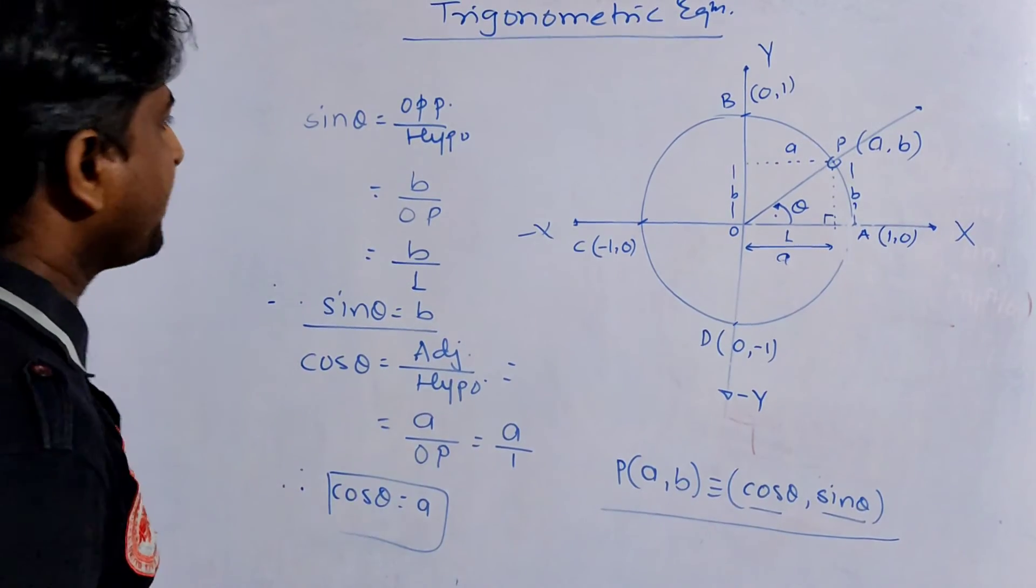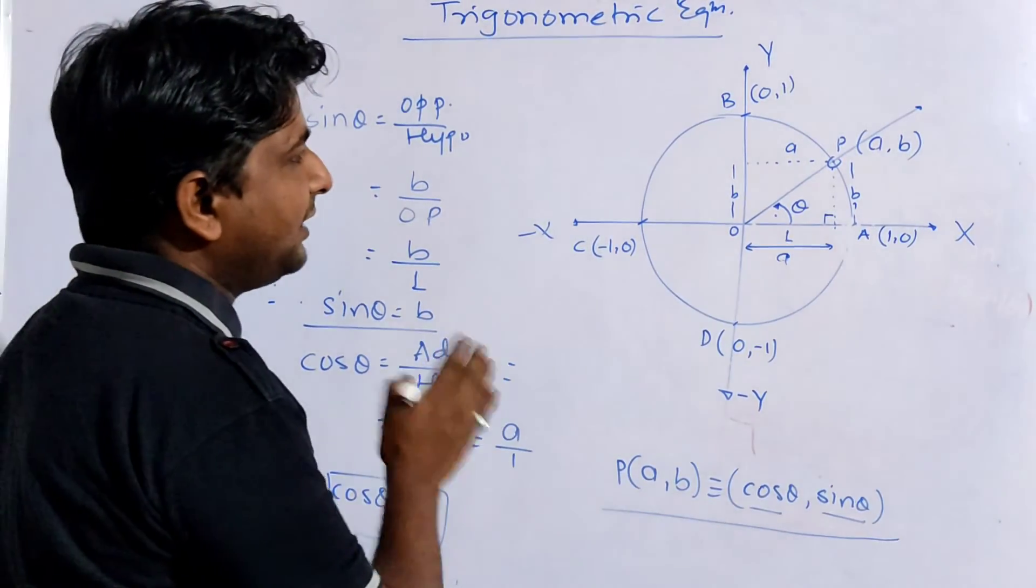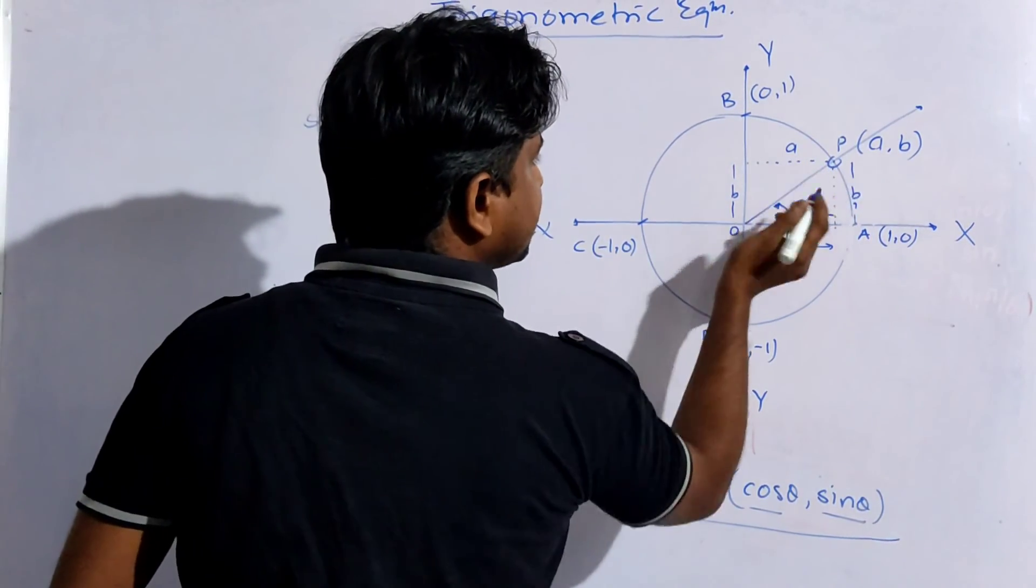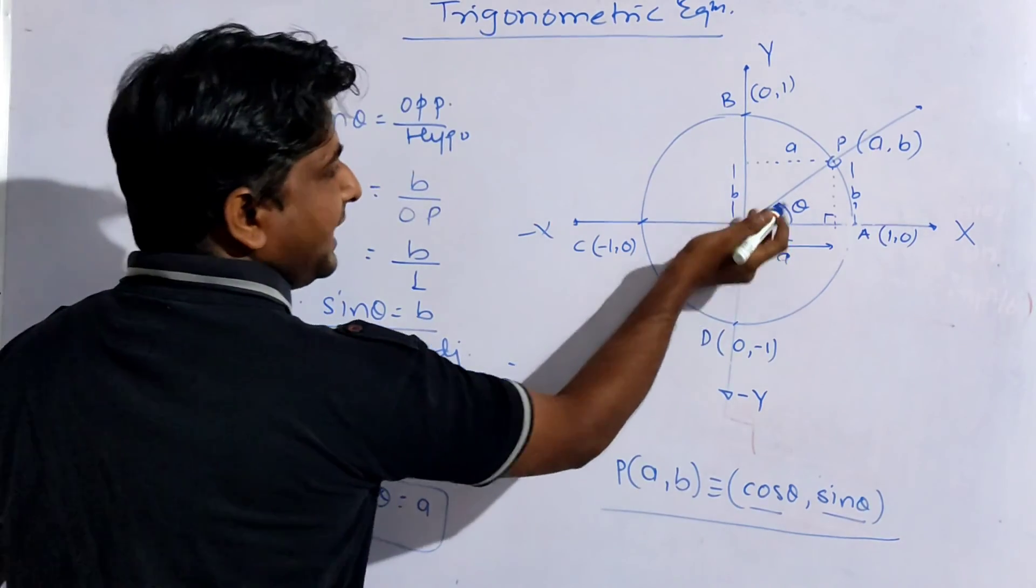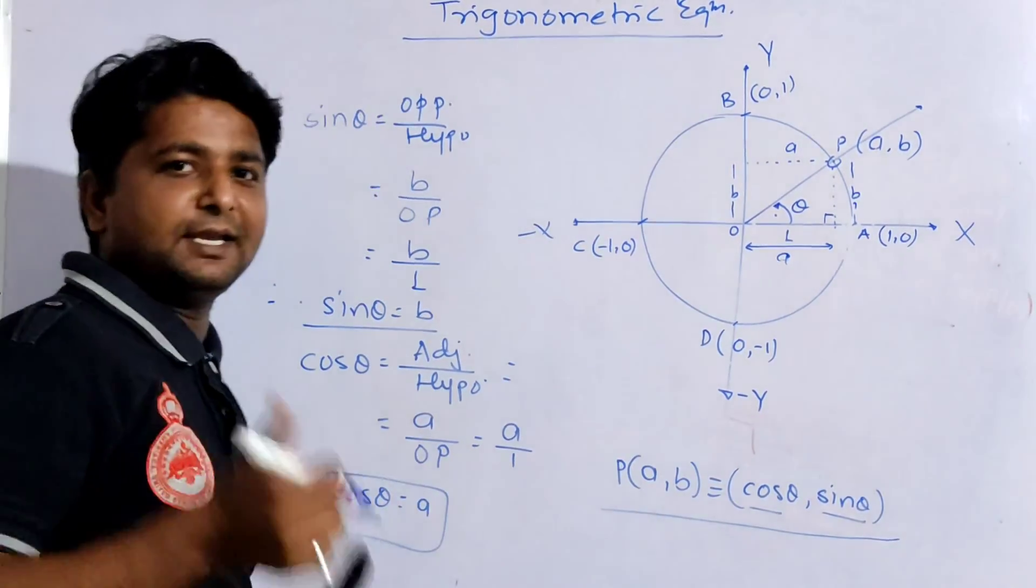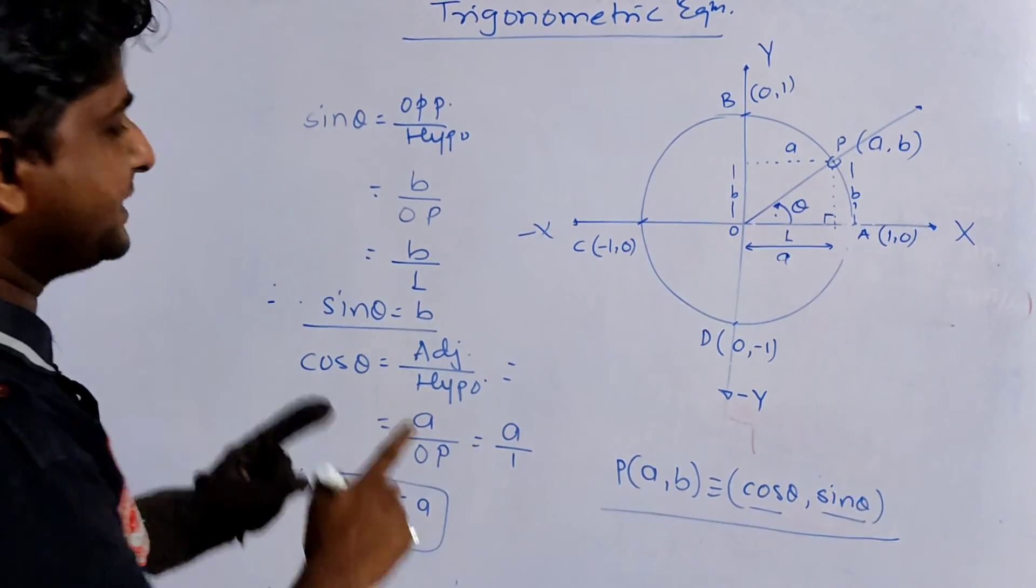In the next video, we will find out what are the allied angles and what happens if this angle is an obtuse angle. If the angle is more than 90 degrees, then what happens - we will be looking at it in the next video. This is about the unit circle.